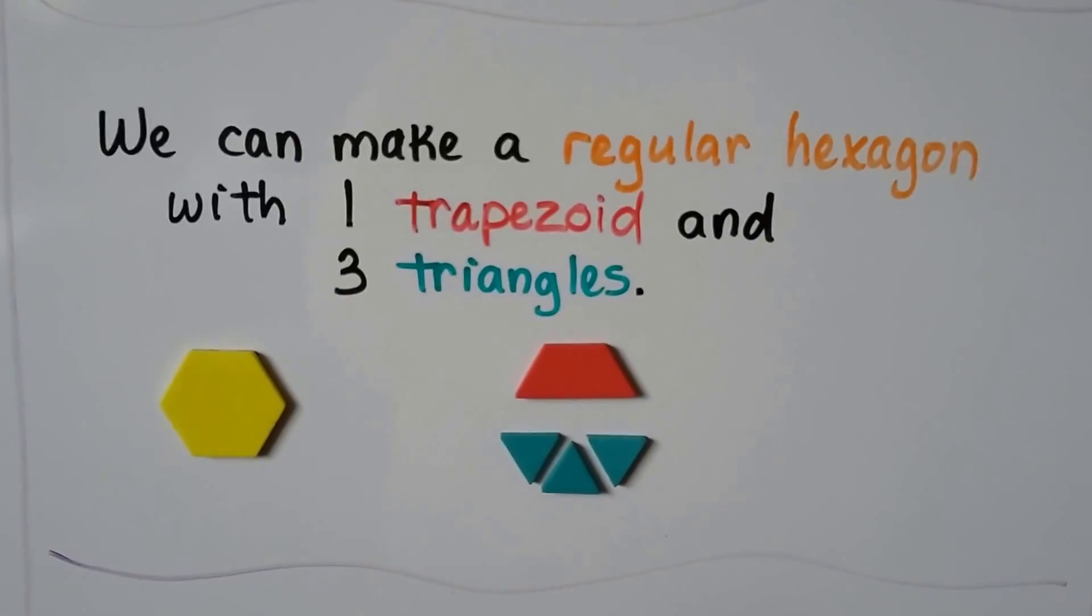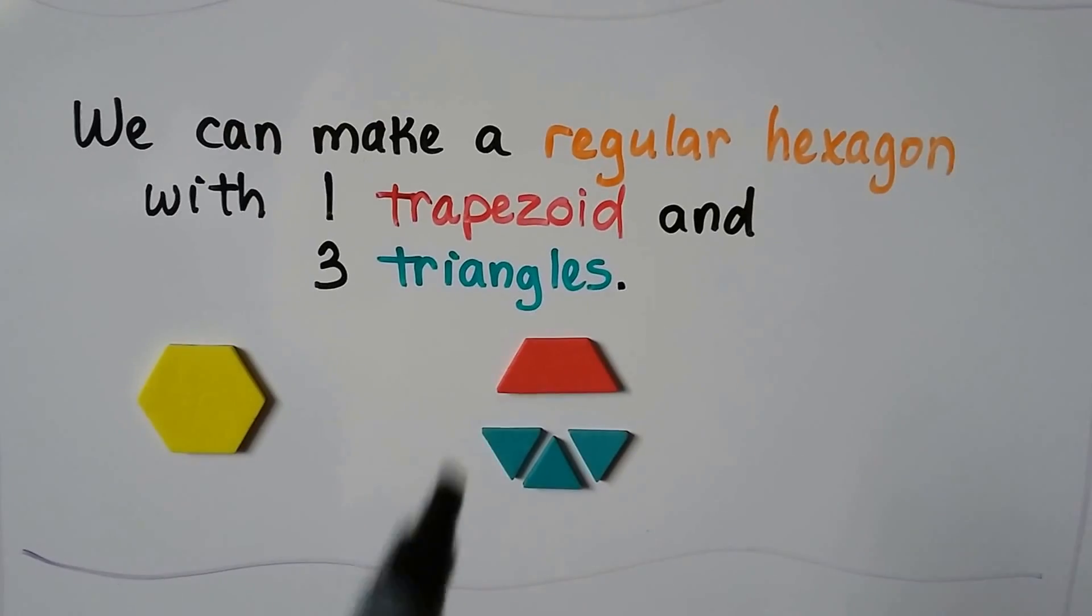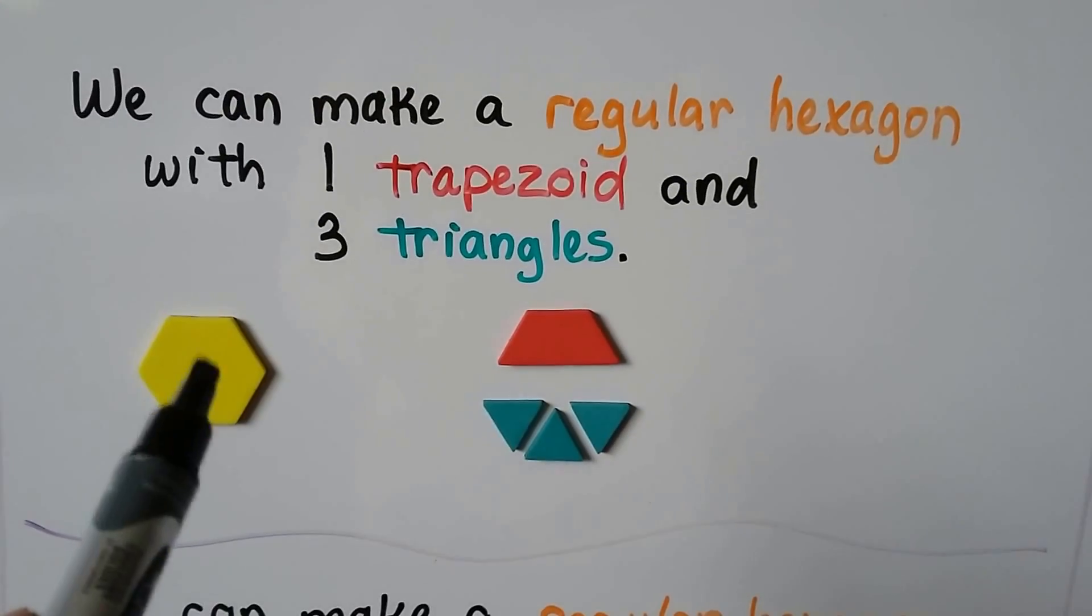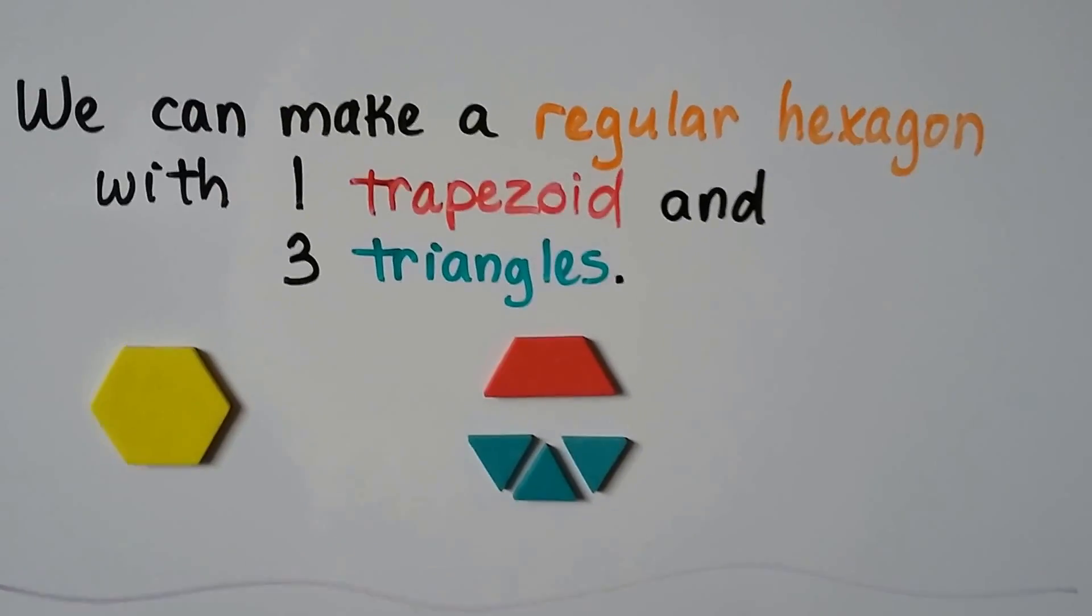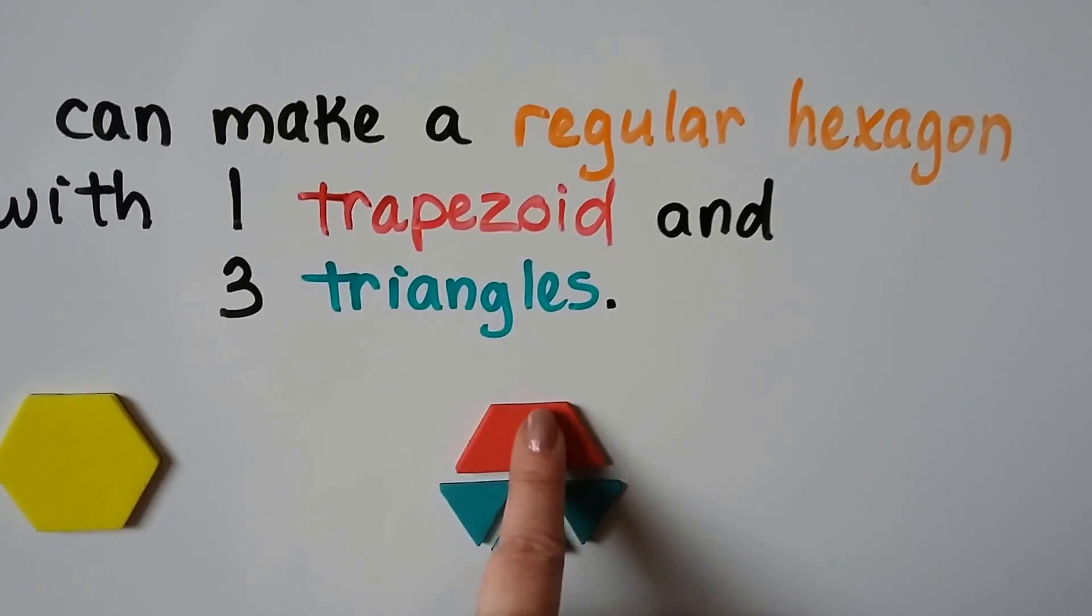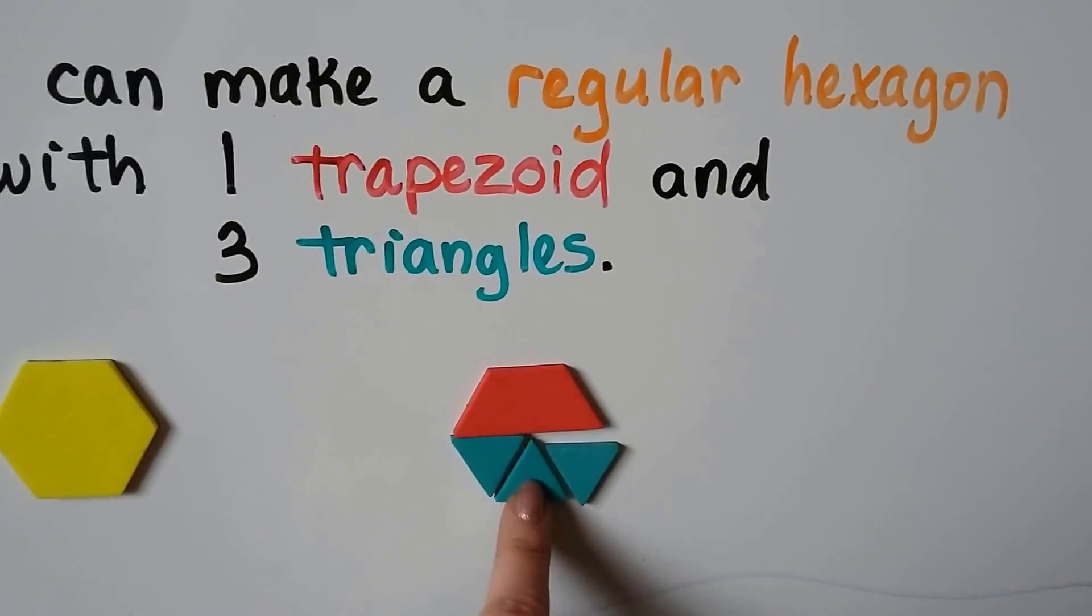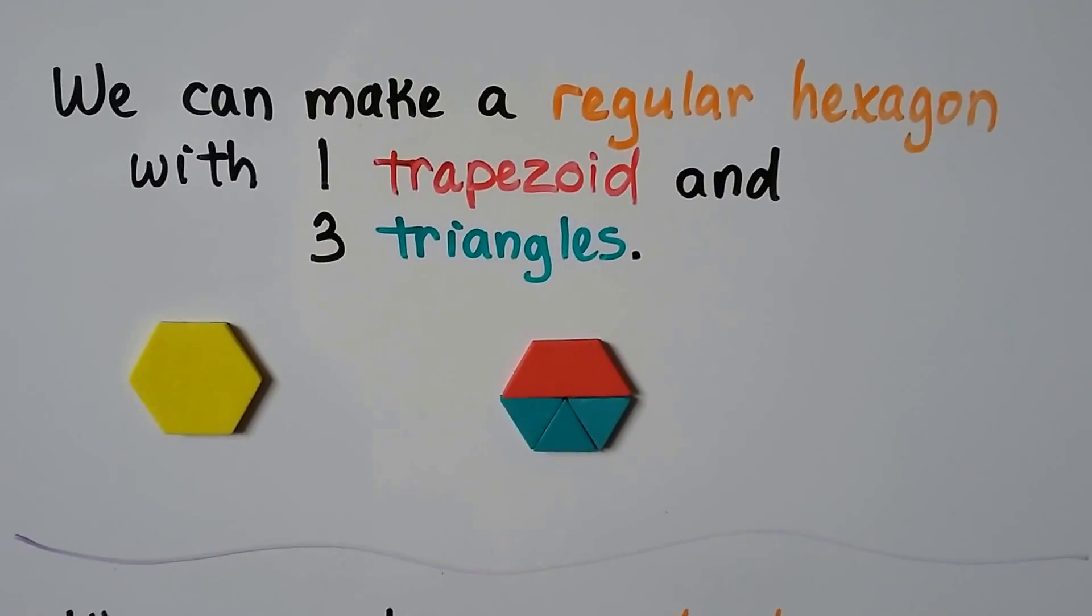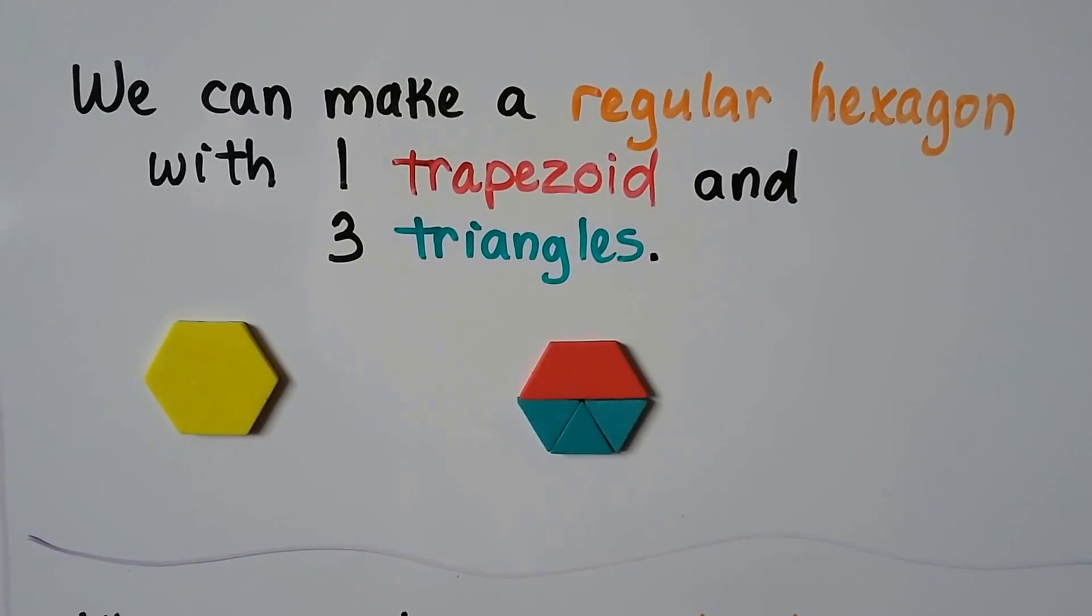We can make a regular hexagon with one trapezoid and three triangles. So here's our regular hexagon. All we have to do is slide them together, a trapezoid and three triangles, and we can make a regular hexagon.